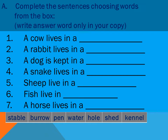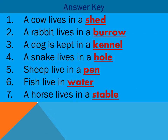Let's see the answers. Number one: a cow lives in a field. Number two: a rabbit lives in a burrow. Number three: a dog is kept in a kennel. Number four: a snake lives in a hole. Number five: sheep live in a pen. Number six: fish live in water. Number seven: a horse lives in a stable.